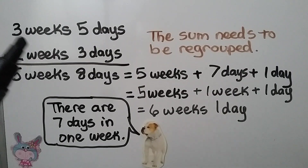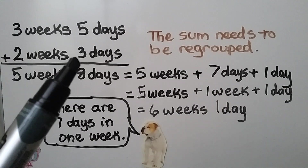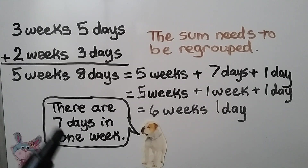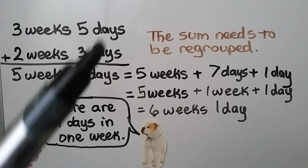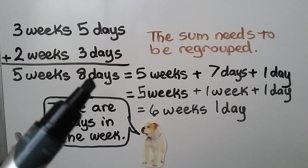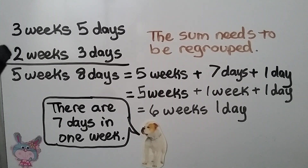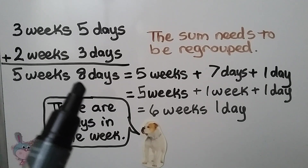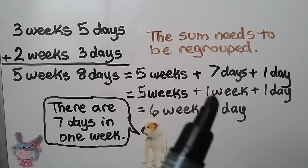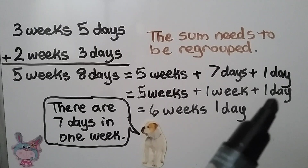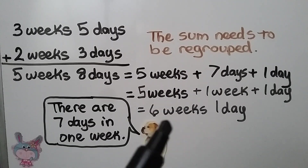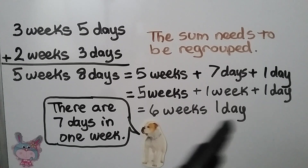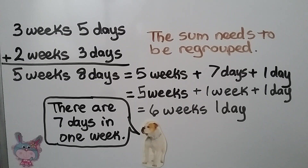Here we need to add three weeks five days to two weeks three days. It's important to know there are seven days in one week. The sum is going to have to be regrouped. First we add the days, the smaller units — we get eight days. Then we add the weeks — that's five weeks. We can regroup this eight days into seven days as one week and then one more day.